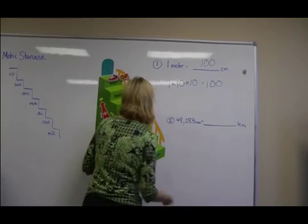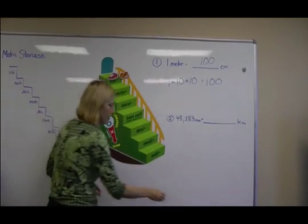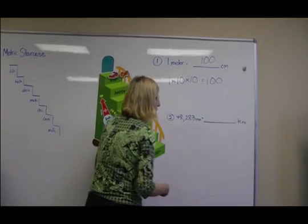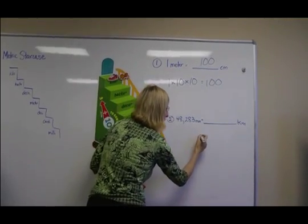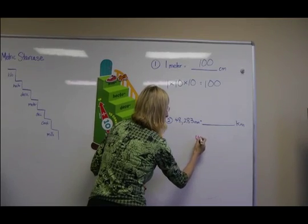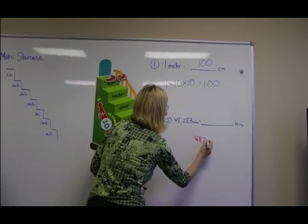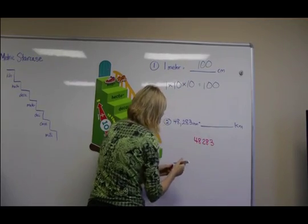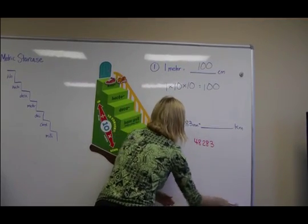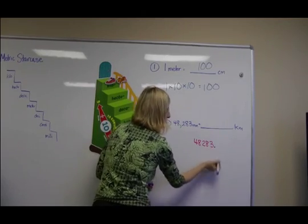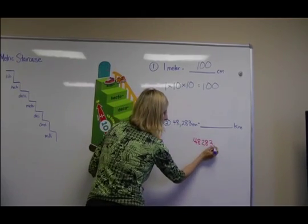So this time, since we're going up the staircase, we need to divide by ten six times. So you probably have taught your students that to divide or multiply, you just move the decimal point. So the decimal point in this number is currently here. And to divide, you move to the left to divide by ten.